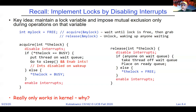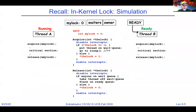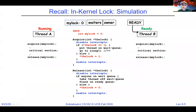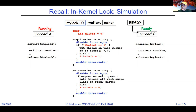Here's the animation I made, now updated to show the particular lock being passed as an address into acquire and release. This simulation runs in the kernel because we're disabling and re-enabling interrupts. Thread A is running and thread B is on the ready queue. The value of mylock is 0, meaning nobody has the lock. Every lock also has a wait queue for threads that are blocked waiting. Right now the wait queue is empty. There is also an owner field, though it's not strictly required — some lock variants track ownership, but a lock doesn't inherently need to remember its owner.